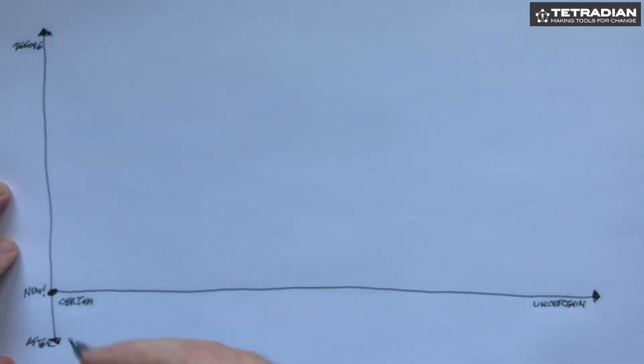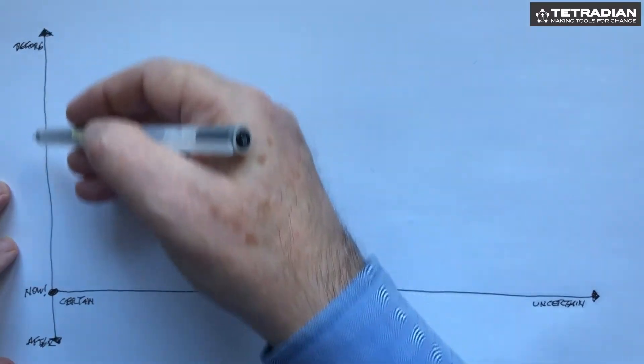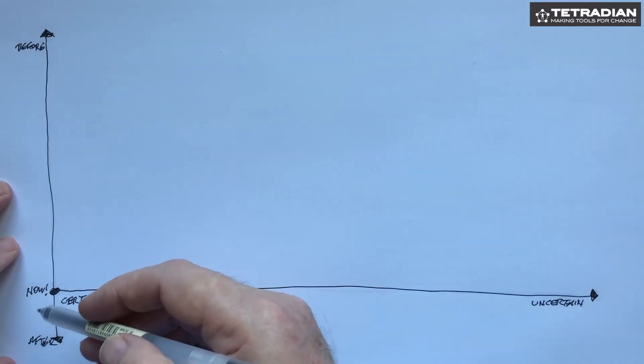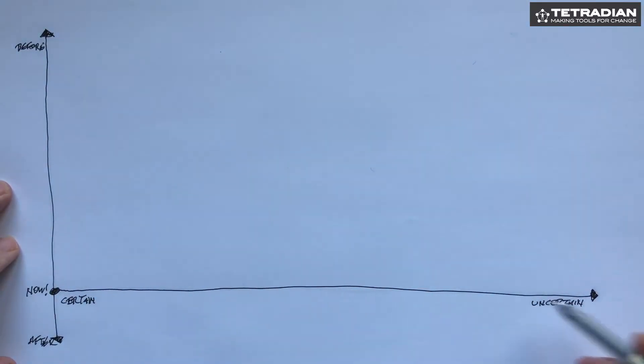The first one here is that we've got this distinction about how much time we have before we need to take action in the now, and on the other axis we've got a level of uncertainty.